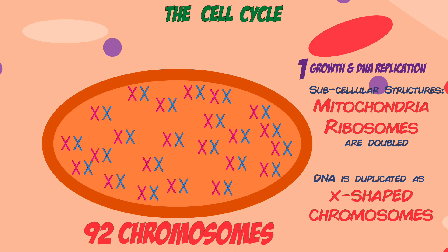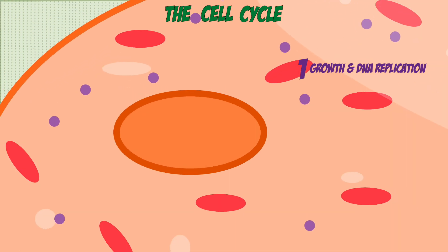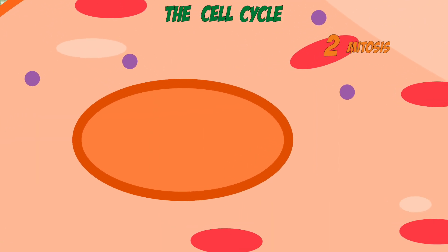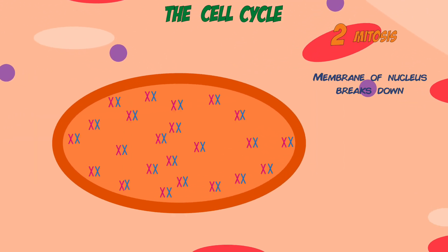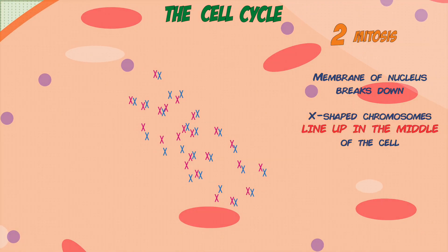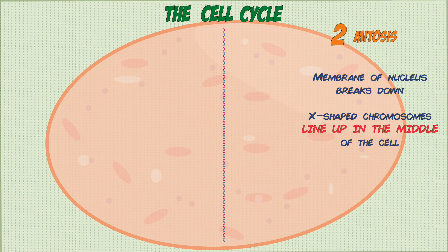The cells are now ready for the second stage, which is mitosis. During this stage, the membrane of the nucleus holding the genetic material breaks down and all the duplicated X-shaped chromosomes line up in the middle of the cell.